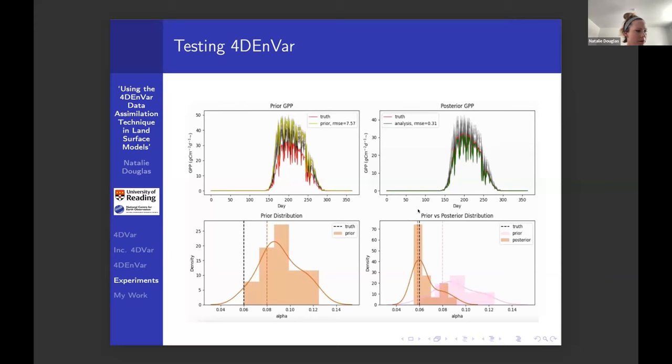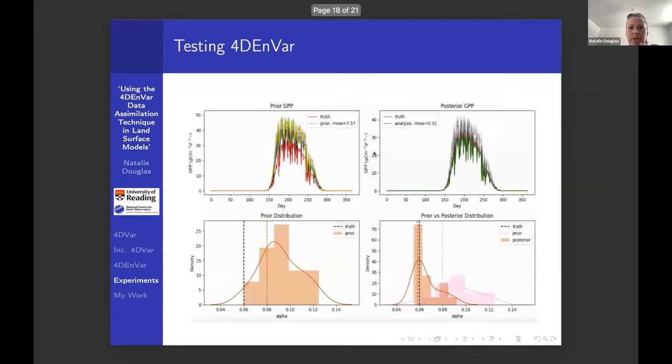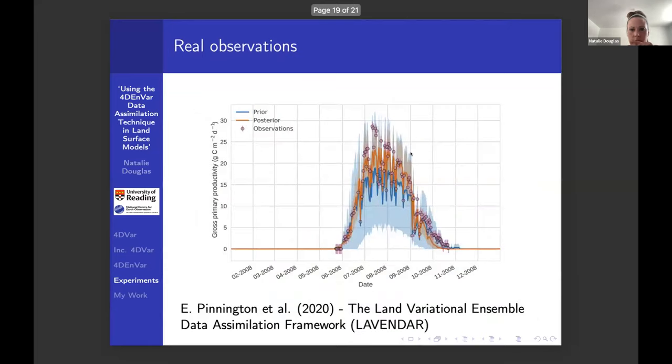I think I'm almost out of time. This is actually a result that my predecessor came up with and published in 2020. I think Ewan is speaking next, actually, but on something unrelated. You can see that this is 4D-EnVar in practice. This was also done with a synthetic run first to make sure that it works properly. There are multiple parameters being optimized here. You can see that the posterior GPP is matching up with those observations quite well. The RMSE is a good indicator to show that your 4D-EnVar is working, so it's worth keeping those in.